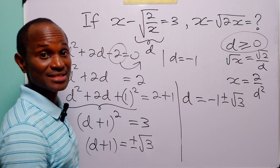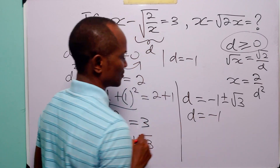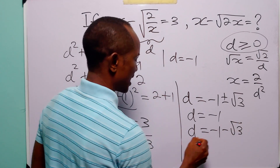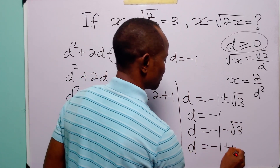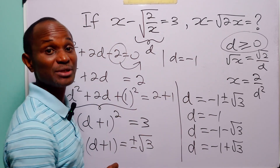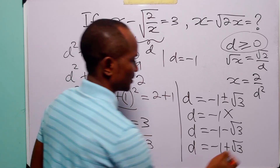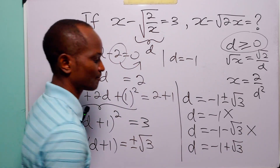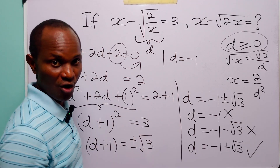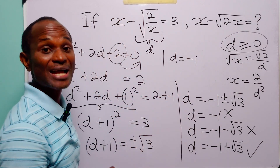We now have three values of d: d = −1 (from the factor d + 1), d = −1 − √3, and d = −1 + √3. Applying the condition that d must be greater than or equal to 0, the first two values are not acceptable. The only acceptable value is d = −1 + √3, since it is the only positive value. We will now substitute this into our expression.